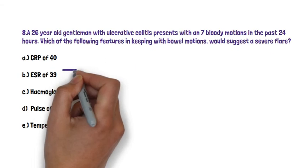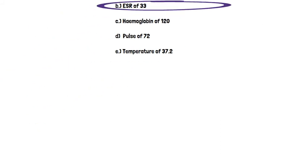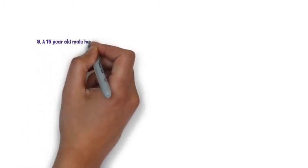The answer here is B. This relates to the earlier question on classifying ulcerative colitis using the Truelove and Witts criteria. For a severe flare, a patient must have more than 6 motions — this patient has had 7 bloody motions — plus one of the following: large amount of blood, ESR over 30, pulse over 90, haemoglobin under 10g/dL, or pyrexia over 37.8°C. Out of all the options, an ESR of 33 is the only one in keeping with those criteria. CRP, option A, is not used in the Truelove and Witts classification of mild, moderate and severe flares.